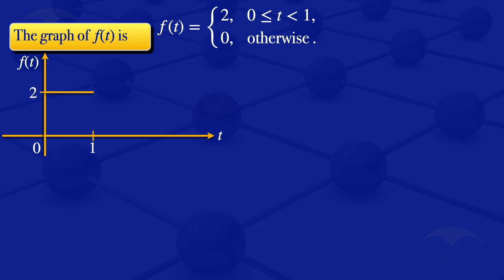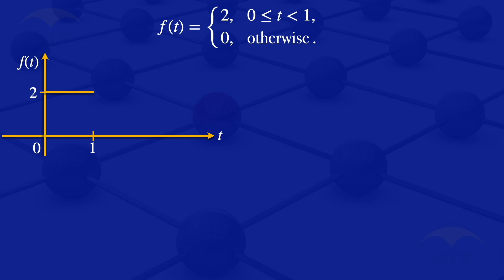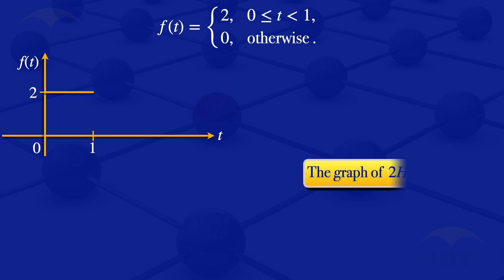Our graph is 2 between 0 and 1. So that's the graph of f of t. Looking at this graph, we can now try to write it in terms of the Heaviside step function. In this case, we are saying it's a 2 there on the vertical axis.